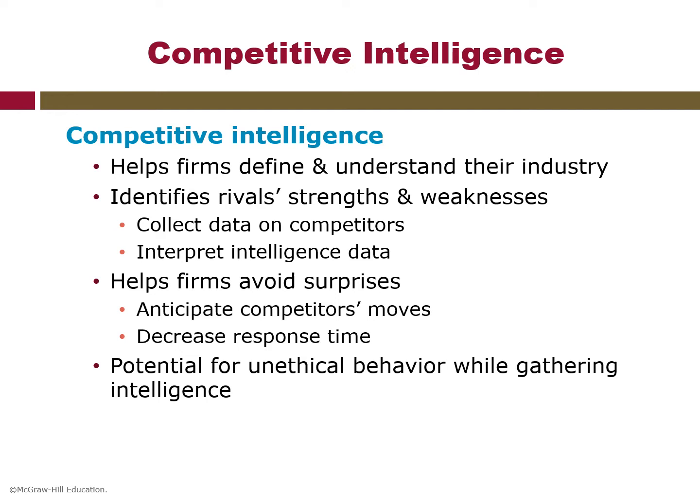The third process is competitive intelligence. Competitive intelligence involves a firm's activities of collecting and interpreting data on competitors, and defining and understanding the industry. Competitive intelligence helps firms identify rival strengths and weaknesses. This includes intelligence gathering associated with collecting and interpreting data on competitors. If done properly, competitive intelligence will help a company avoid surprises by anticipating competitors' moves and decreasing response time.